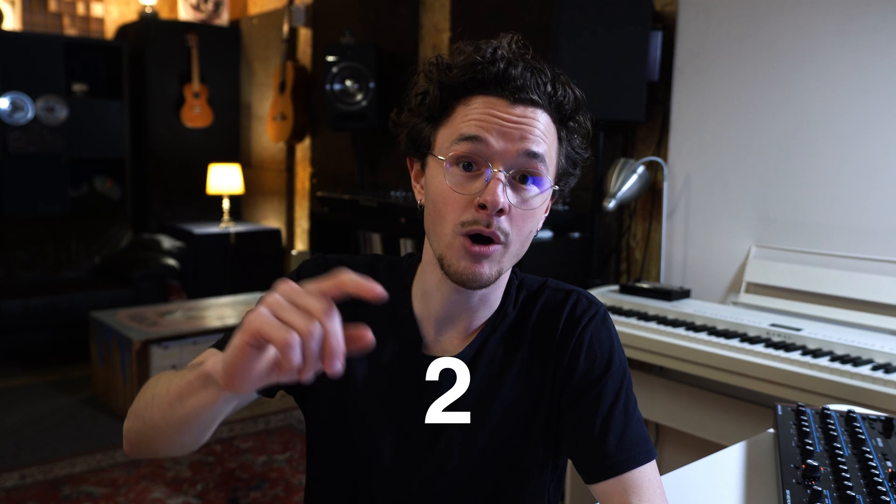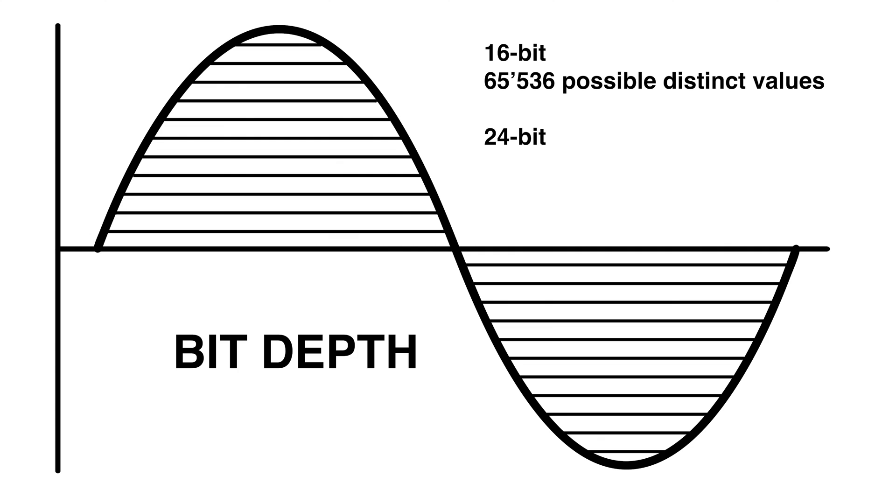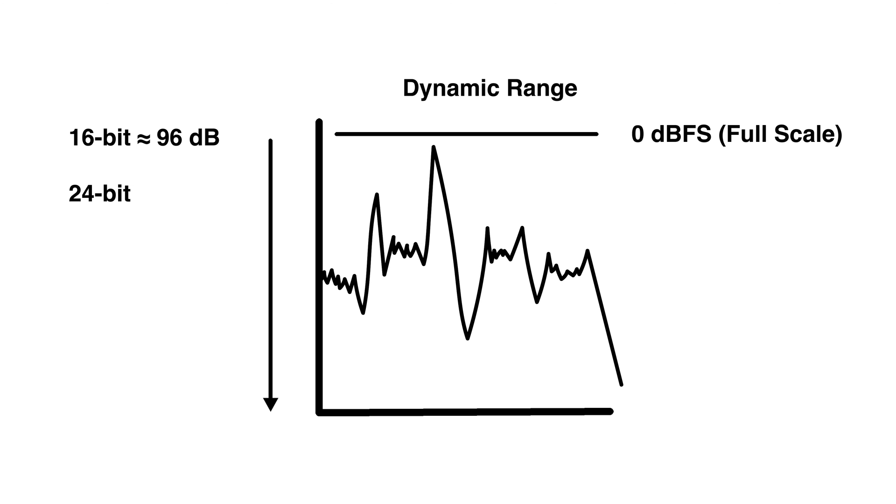Now in a system with a bit depth of 24 bits we actually have a much higher resolution of 2 to the power of 24, which equals 16,777,216 possible values and a dynamic range of 144 dBs.